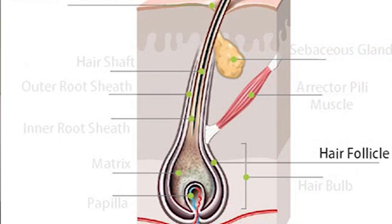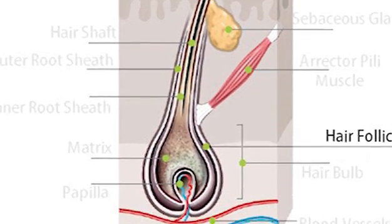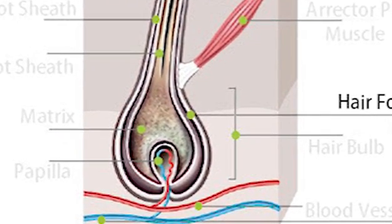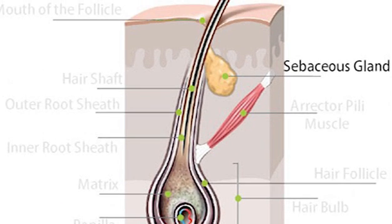The hair follicle is a tube-like depression in the skin which encases the hair beneath the skin surface. The hair follicle is made up of the outer external and inner internal root sheaths. You have your sebaceous glands, which are microscopic glands in the skin that secrete sebum to lubricate and waterproof the skin and the hair.